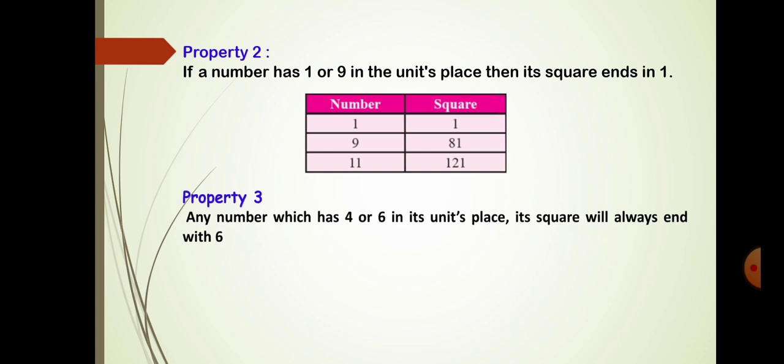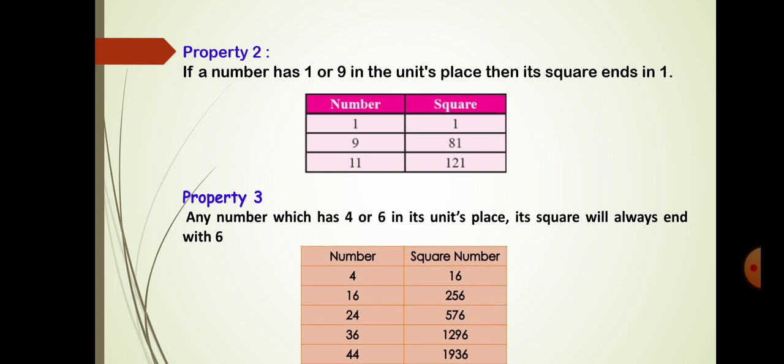Property number 3: If any number has 4 or 6 at its unit place, its square will always end with 6. For example, 4 squared is 16, 6 squared is 36, and 16 multiplied by 16 gives 256. So whenever the ones place digit is 4 or 6, when the number is multiplied with itself, its square always ends with 6.